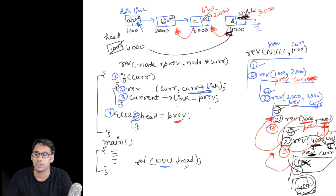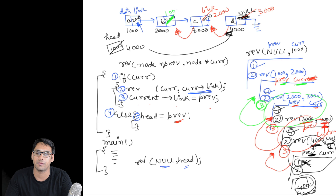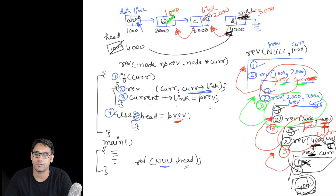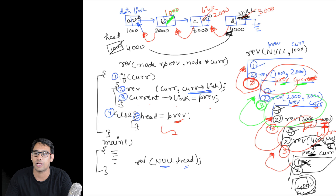After this recursive call finishes, the control goes back to the previous statement. Again we execute line 3, and in that previous statement previous was storing 1000 and current was storing 2000. Therefore current.link will now be storing 1000. Then when this call finishes we go back to the previous statement and execute line 3 again: current.link = previous. Previous is storing null, therefore this link part is now going to store null.